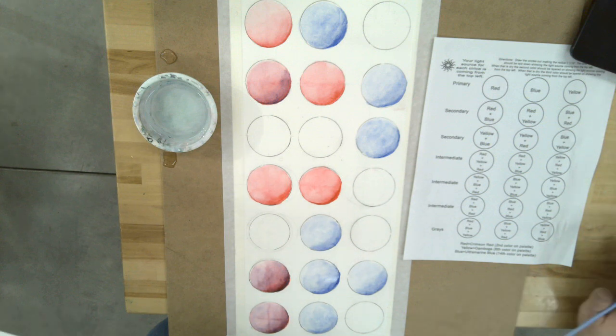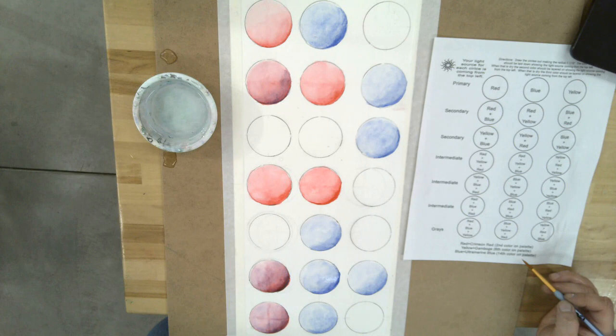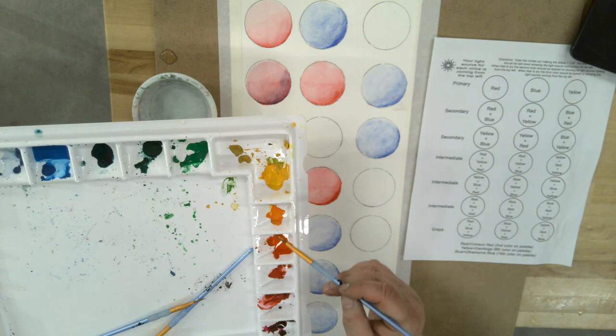Alright, we're ready to do yellow next. The color is called gamboge and it's the sixth color on your palette. Starting at magenta, count one, two, three, four, five, six - it's in that corner. I have clean water to start with.